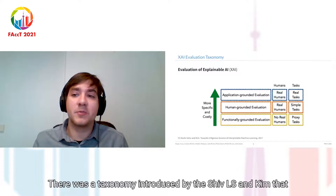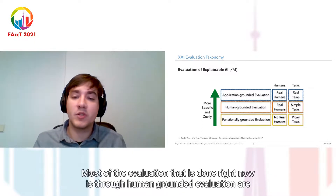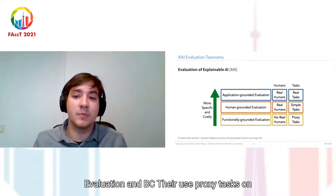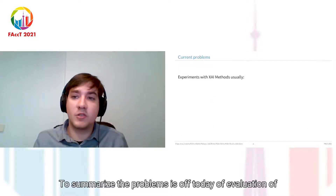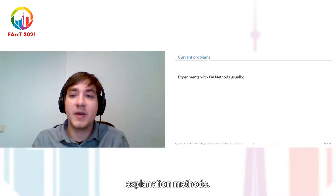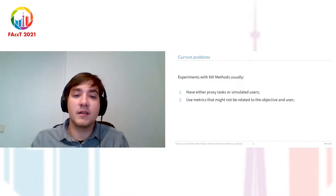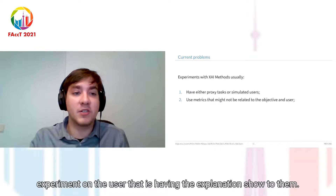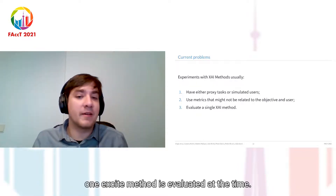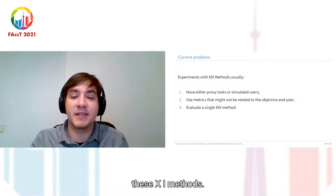There was a taxonomy introduced by Doshi-Velez and Kim that divides the types of experiments that exist with explainable AI. Most of the evaluation done right now is through human-grounded or functionally-grounded evaluation, and these either use proxy tasks on no real humans or simple tasks on real humans. To summarize the problems: experiments have either proxy tasks or simulated user behaviors, metrics might not be related to the objective of the user, and only one XAI method is evaluated at a time. The main reason is a lack of a standardized evaluation approach.